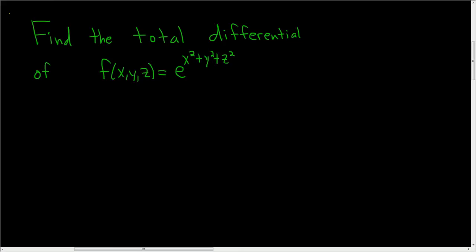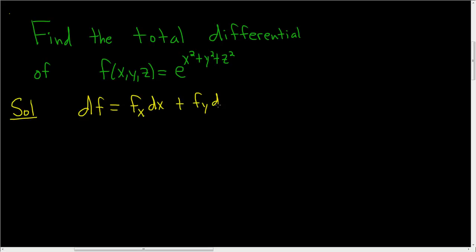We're being asked to find the total differential of this function. The formula for the total differential for a function of three variables is df equals the partial derivative of f with respect to x, dx, plus the partial derivative of f with respect to y, dy, plus the partial derivative of f with respect to z, dz.